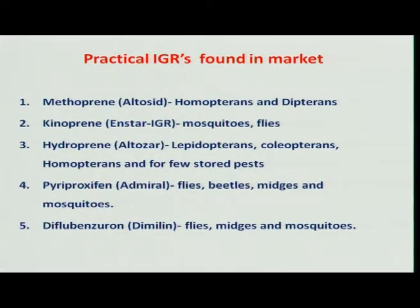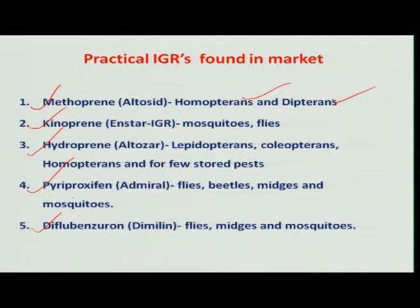There are many insect growth regulators available in the market. Among them, methoprene was the first to be released as an insect growth regulator, which is very effective against homopterans and also dipterans, followed by kinoprene, hydroprene, pyriproxyfen, and diflubenzuron. These chemicals are available in other countries; only diflubenzuron is available in India for the management of various insect pests.